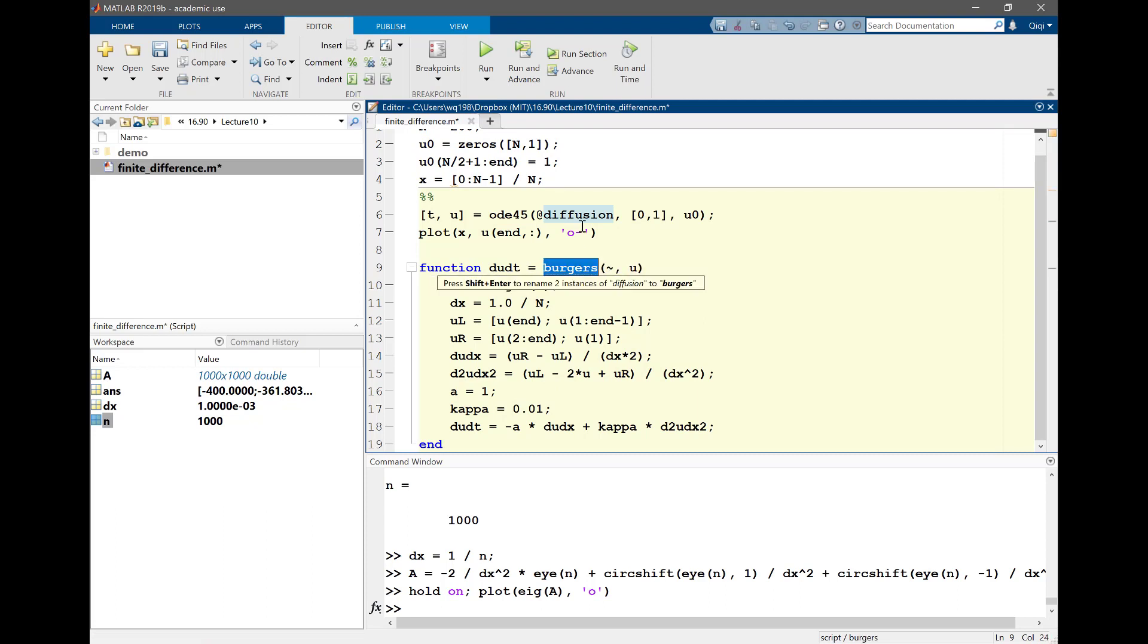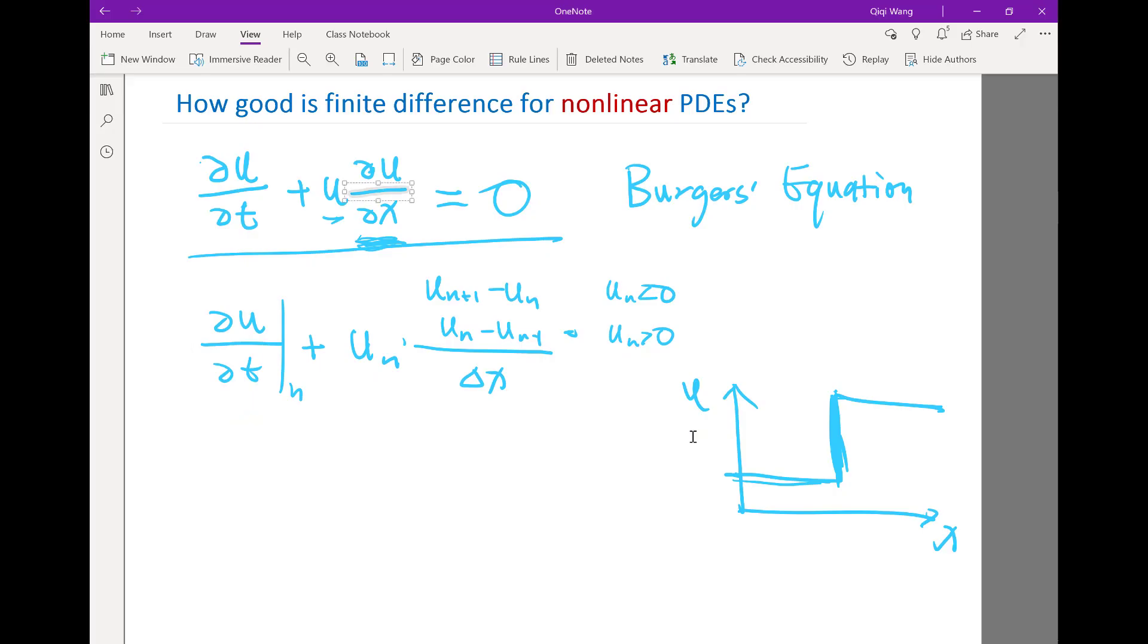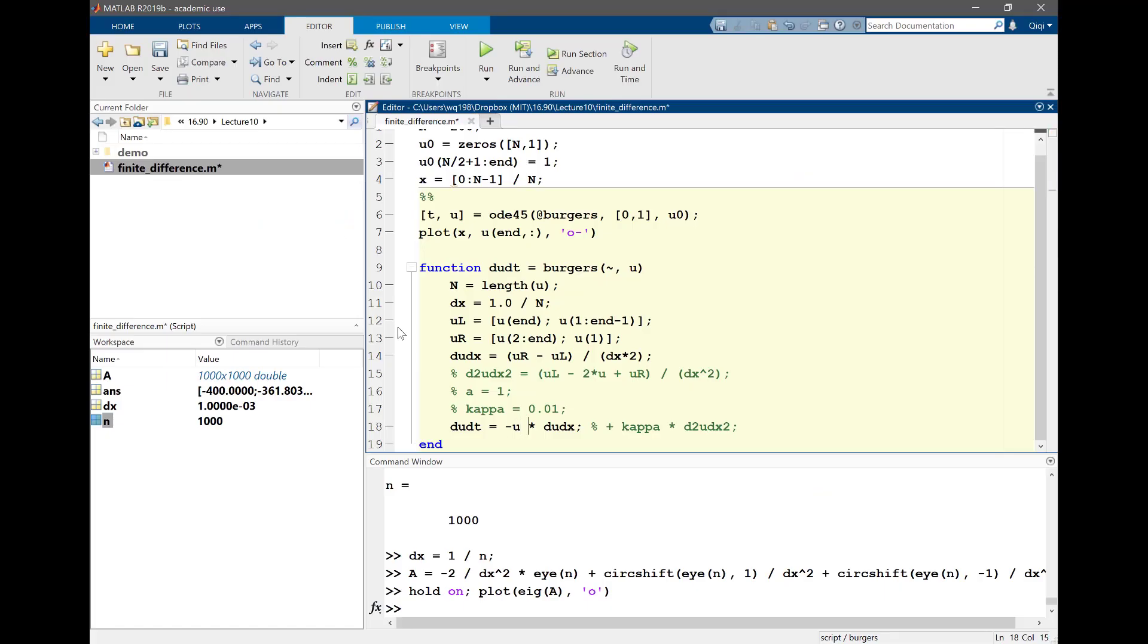And we don't need the second order derivative, at least for now. The one without the second order derivative is called the Inviscid Burgers equation. So let's comment this out, and we also don't have an A, so du dt is going to be equal to minus, so what is it, minus U times du dx. And we need a dot product here because in MATLAB that means I'm going to be multiplying the corresponding entries of the vector u with the corresponding entries of the vector du dx.